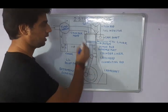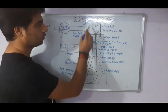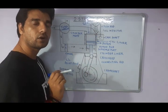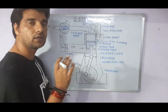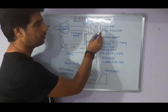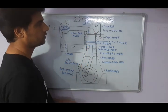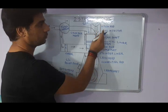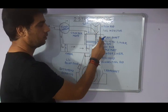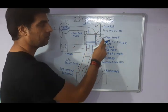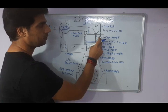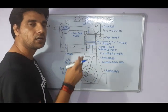Starting from the top of the diagram, the first component is the rocker arm. The use of the rocker arm is to operate the exhaust valve in the two-stroke engine. The rocker arm is operated by the push rod — you can see it here on the diagram. The push rod is operated by the camshaft, which is shown here. So the camshaft operates the push rod, and the push rod operates the rocker arm.